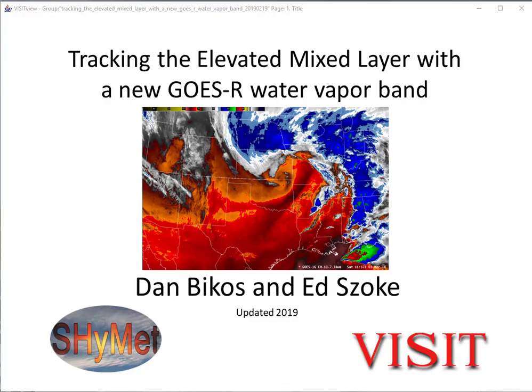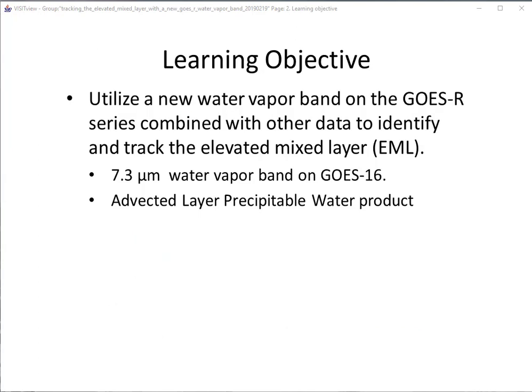Welcome to the training session titled Tracking the Elevated Mix Layer with the new GOES-R Water Vapor Band. My name is Dan Bikus, and Ed Zouk assisted me in putting this together. The learning objective for this session is to learn how to identify and track the elevated mix layer by making use of the low-level water vapor band at 7.3 microns on GOES-16 and the advected layer precipitable water product in tandem with other datasets.